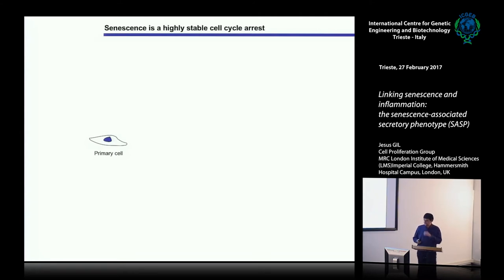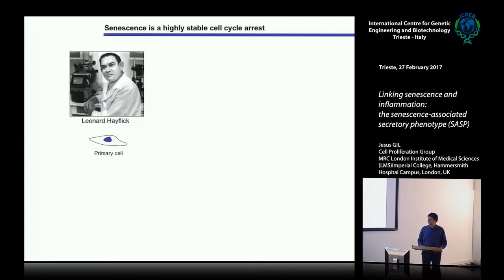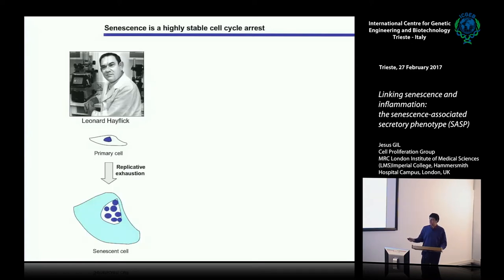Senescence is a concept that came from the 1960s, where Hayflick, trying to figure out how to grow viruses to produce vaccines, started to grow normal cells. His intention was just to expand viruses in normal cells instead of cancer cells. But what he figured out is that these normal cells proliferate for only a limited amount of time, and they reach a state he called senescence after replicative exhaustion.